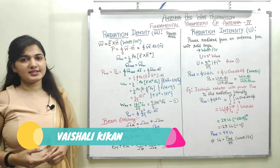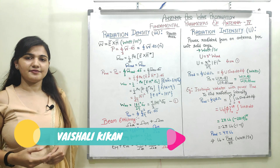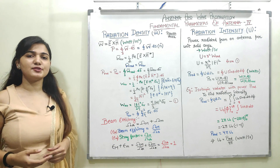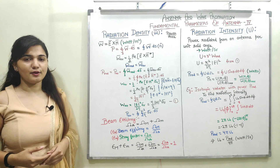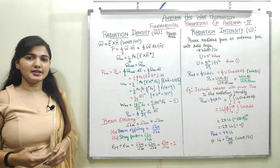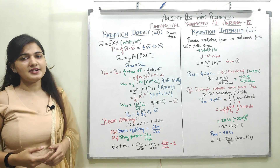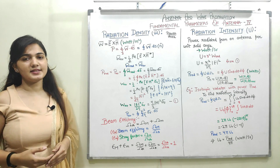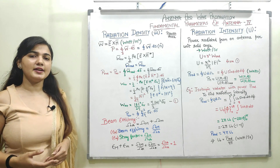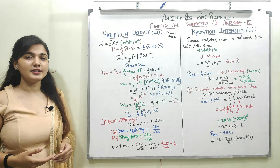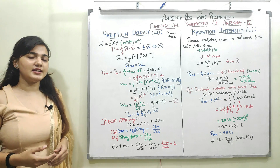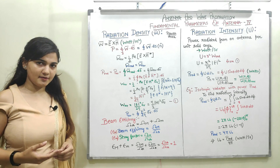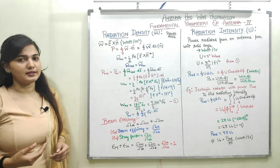Welcome to this video lecture series on Antenna and Wave Propagation. In this video, we will discuss the next two fundamental parameters of the antenna which are radiation density and radiation intensity. Radiation density is basically the power radiated by the antenna per unit area, whereas radiation intensity is basically the power radiated by the antenna per unit solid angle.